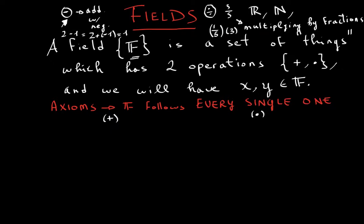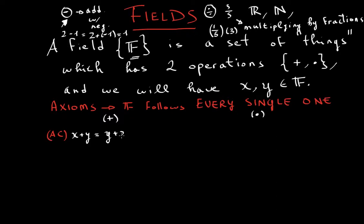The first axiom is called additive commutativity. This says that if we have x and we add it to y, it will be equal to y plus x, for all x, y which are elements of the field.